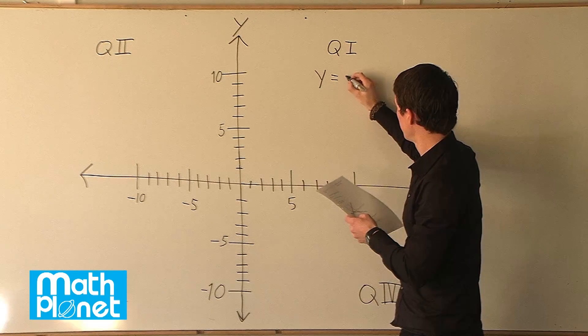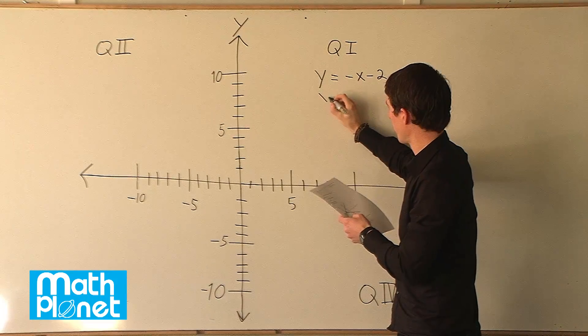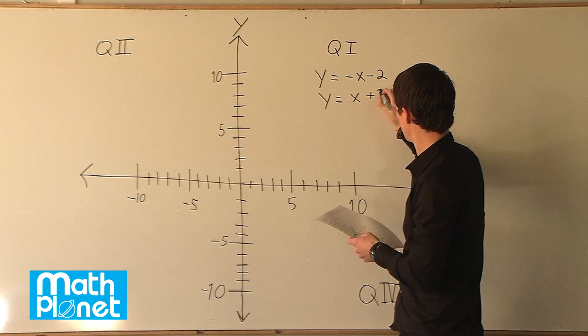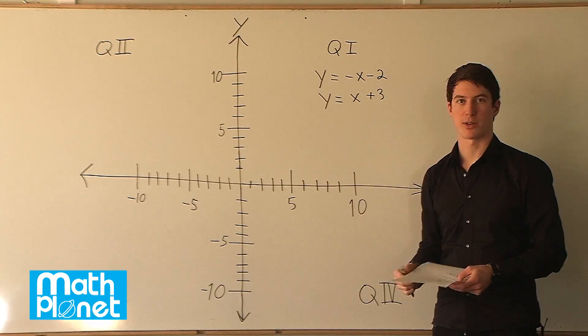y equals negative x minus two and y equals x plus three. There are different ways to solve systems of equations, in this case let's solve this by graphing.